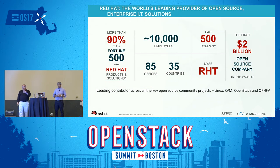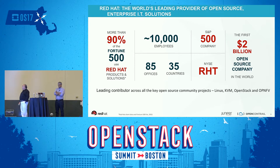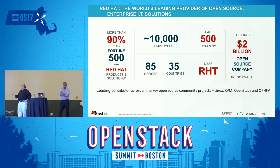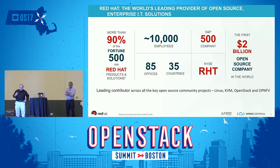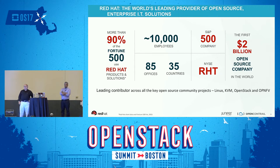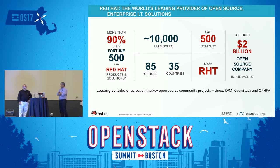Red Hat is very engaged in the telco space and the networking space. Essentially all of the S&P 500 telcos use Red Hat. We are a software infrastructure company and the leading contributor across key open source community projects, including Linux, KVM, OpenStack, and OPNFV. OPNFV is the reference architecture for building a telco-grade NFV platform.